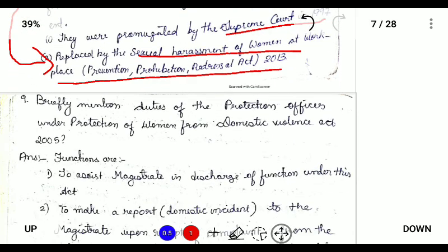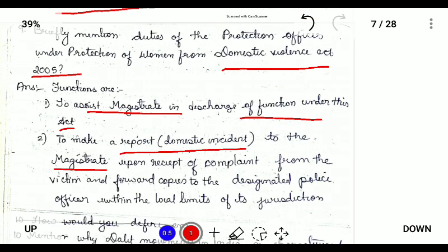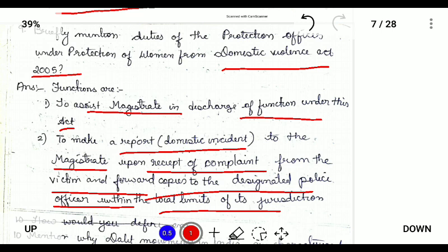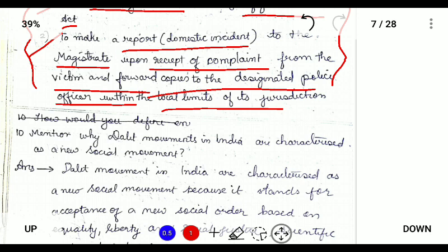Mention the duties of the Protection Officer under the Protection of Women from Domestic Violence Act 2005. Under the Act, the Protection Officer's job is to assist the magistrate in dealing with cases, to make a report of the domestic incident to the magistrate upon receiving a complaint from the victim, and to forward copies to the designated police officer within the local area. For two marks, we only need to write two concise points.